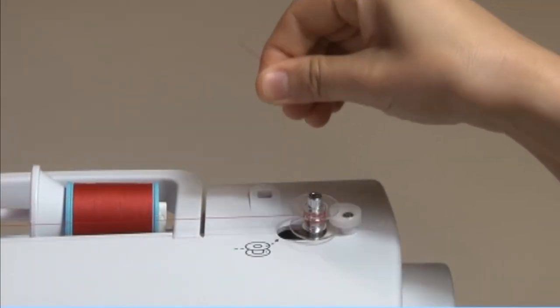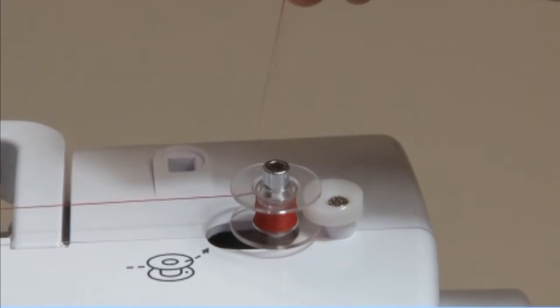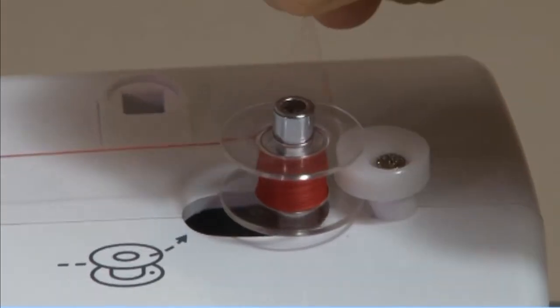After the bobbin has wound a few turns, stop the machine and cut the thread near the hole of the bobbin.